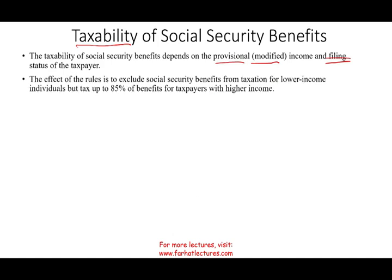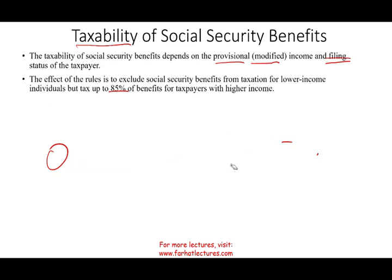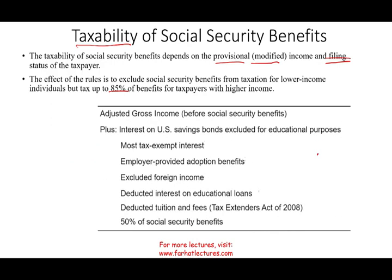The effect of the rules is to exclude social security benefit for people who are in the lower individual tax bracket. Simply put, if you don't make a lot of money, if you're in a low tax bracket, none of your social security benefit is taxable. If you are in a slightly higher tax bracket, it could be up to 85%. So the taxable portion ranges from zero to 85%. First, how do we compute this provisional modified income?